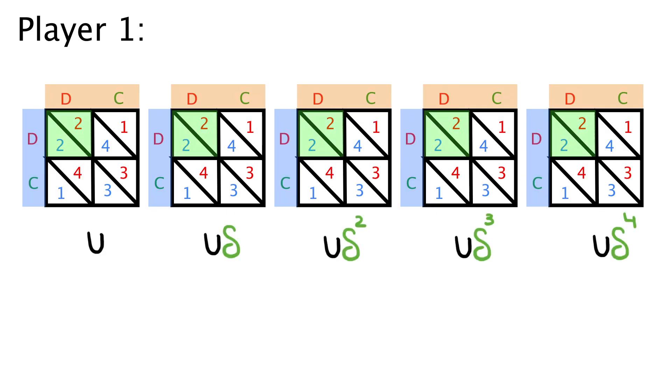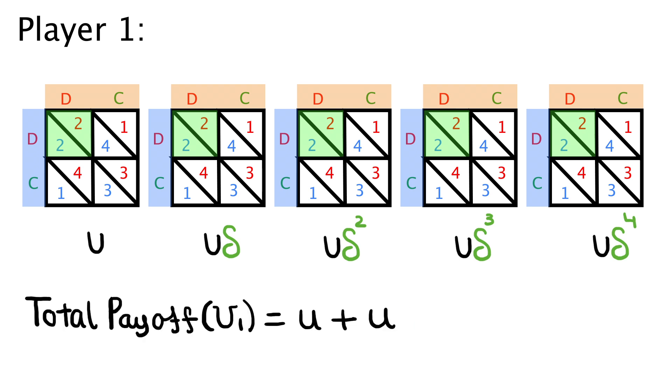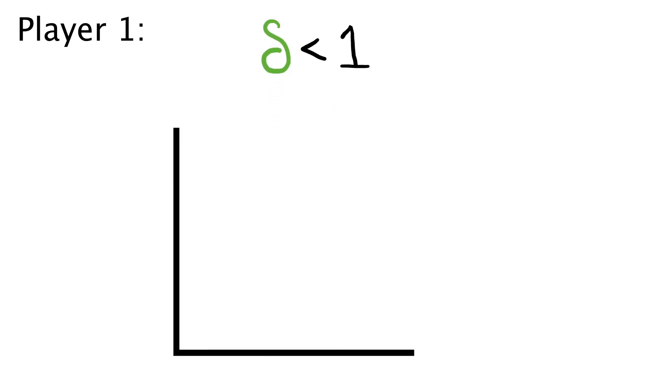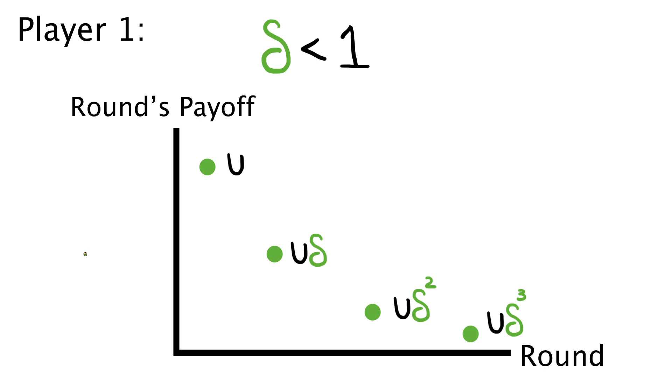If, for example, the payoff of player 1 is u for every game he plays, his total payoff with delta accounted for will be u plus u delta plus u delta squared and so on. Since delta is less than 1, the value of each subsequent round decreases and this effectively puts pressure on him to consider his decisions as the value of his payoff decreases over future rounds.